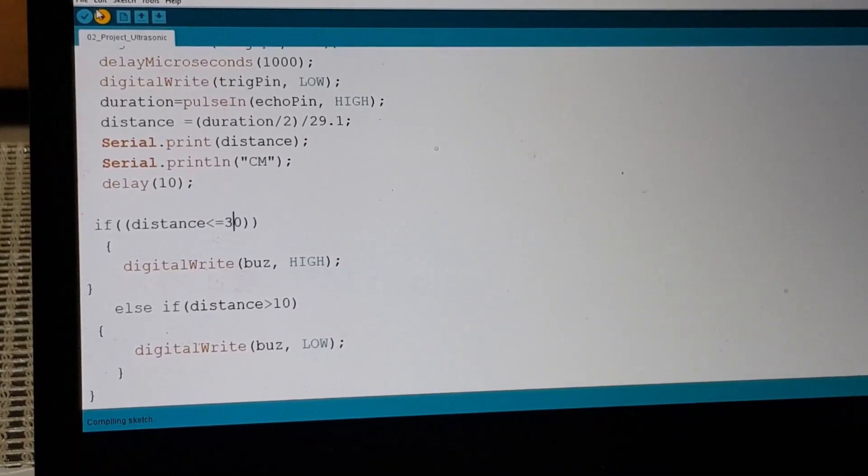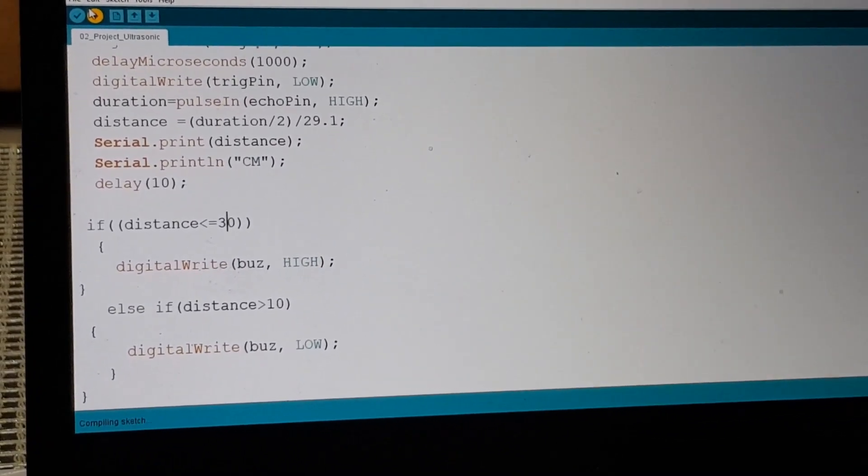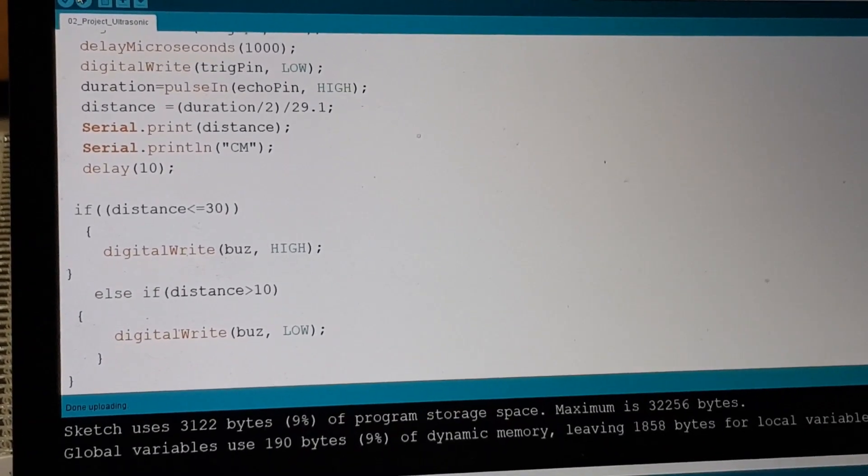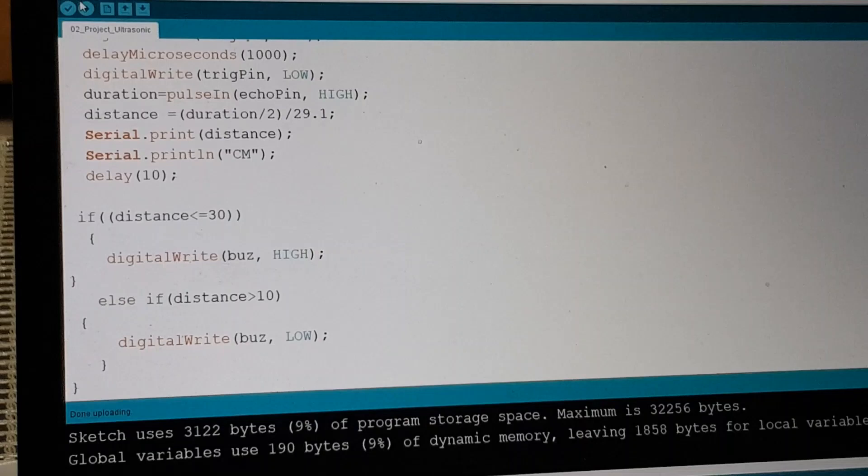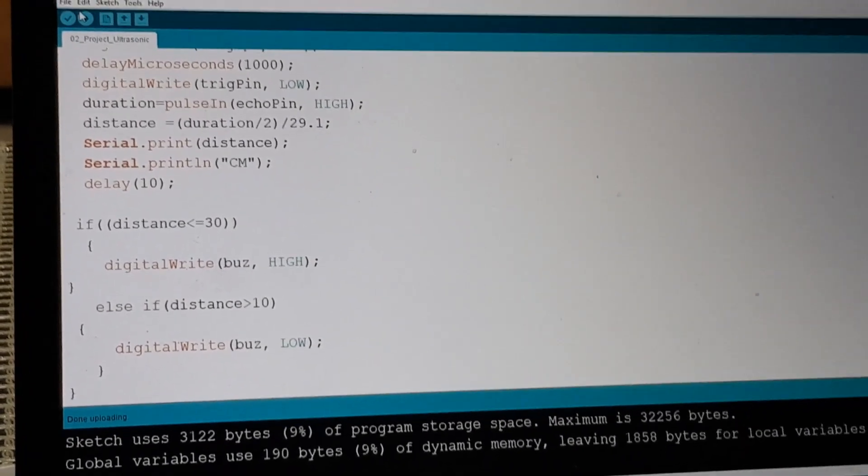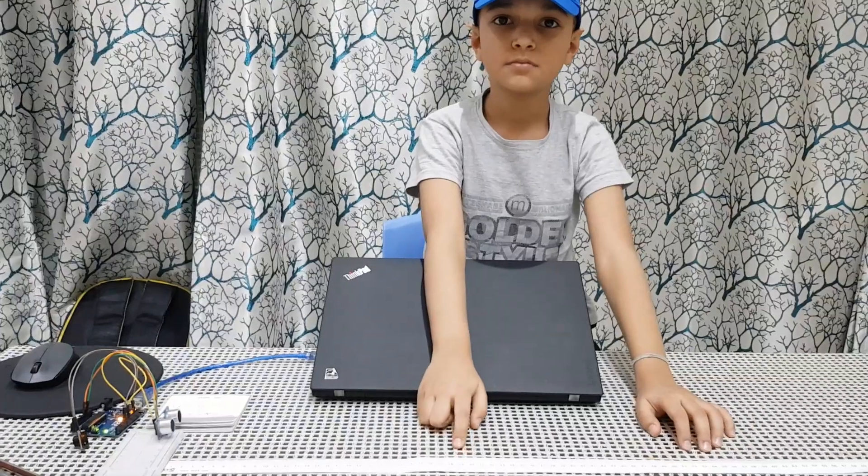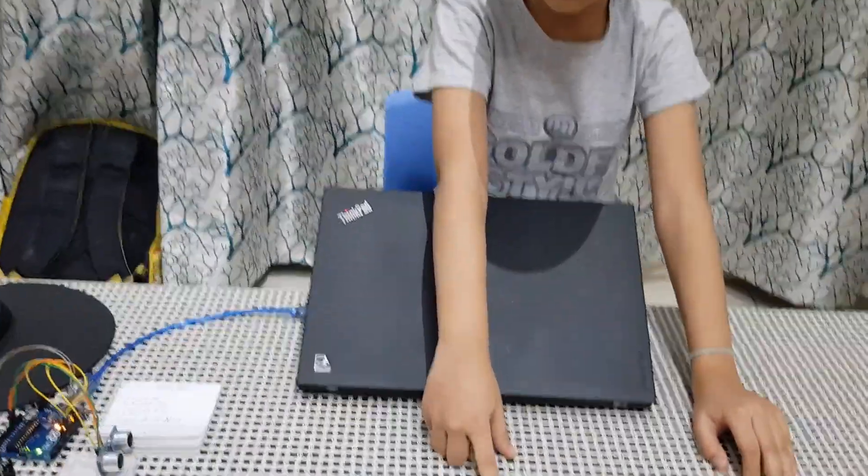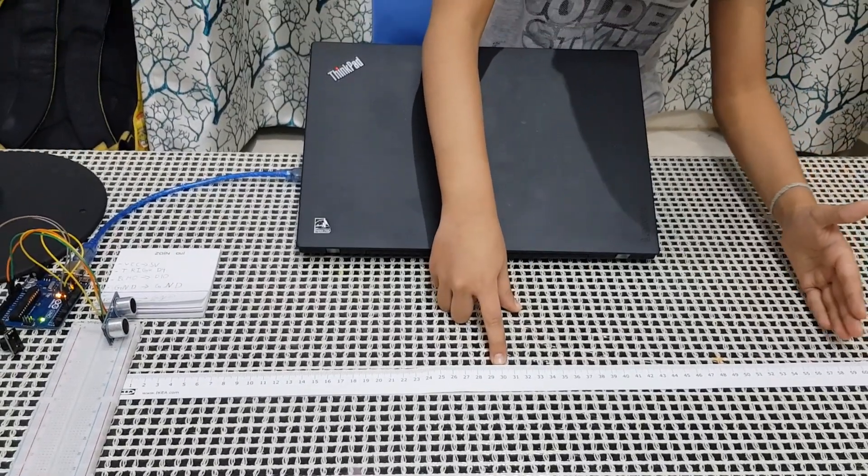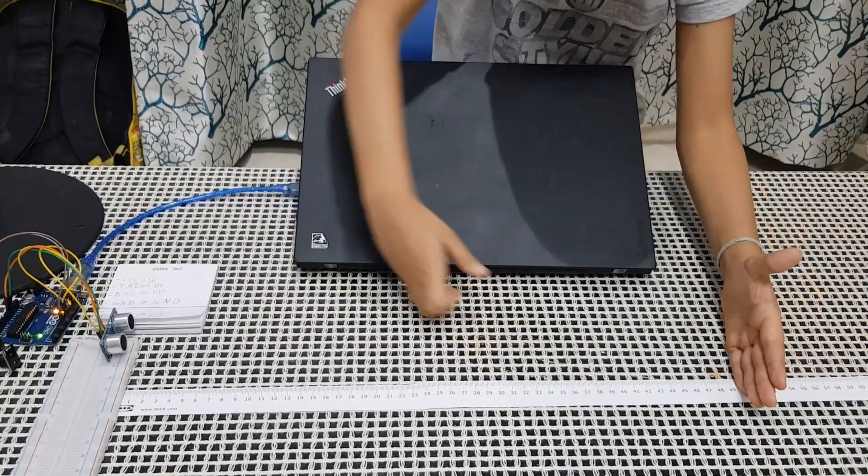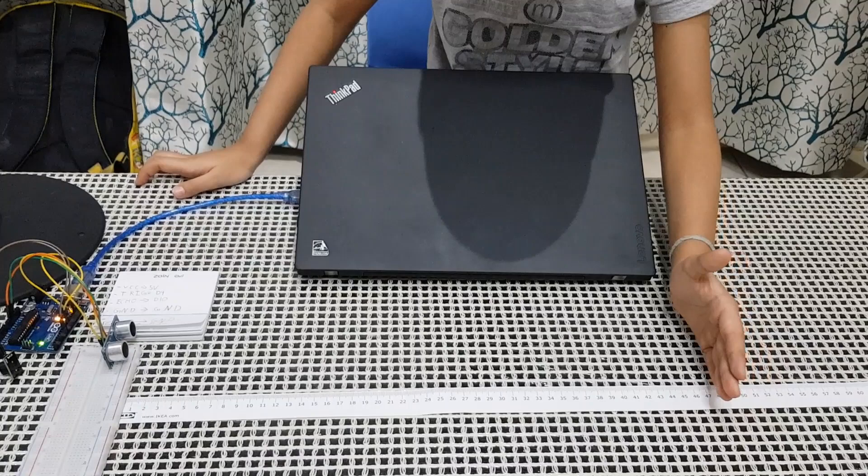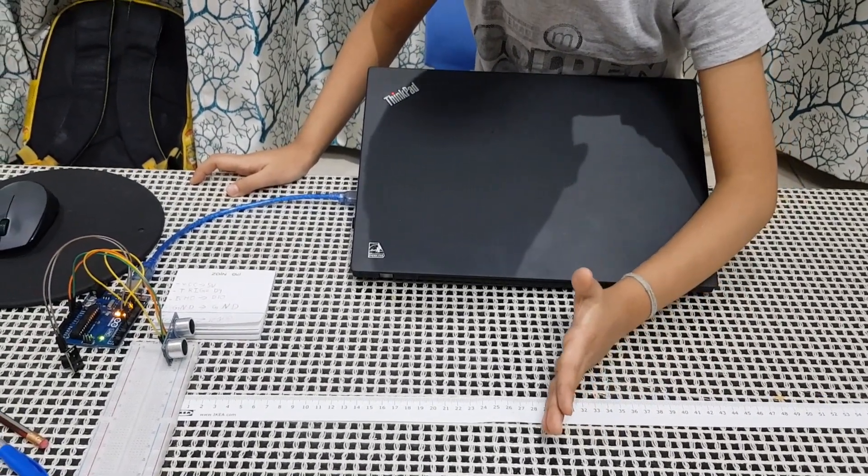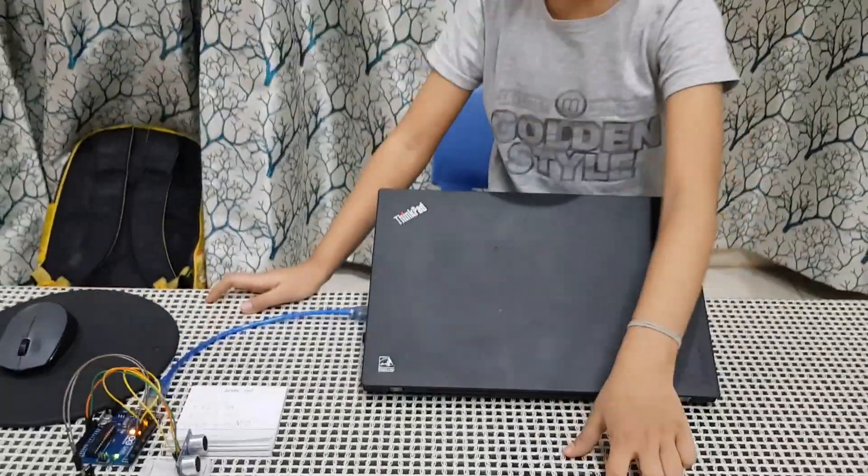Load. Okay. It's compiling. Then uploading. So now it should buzz if I come inside 30 centimeters. Okay. So 30 centimeters is right over here. So let's start at 50. So let's start at 30. Come in, come in. 38. 32. The buzzer is at 30.